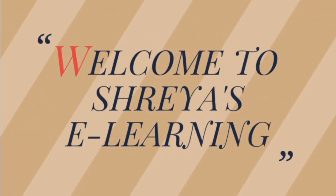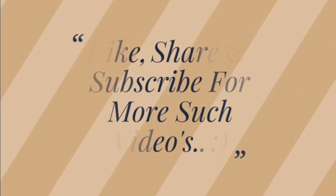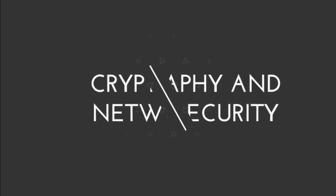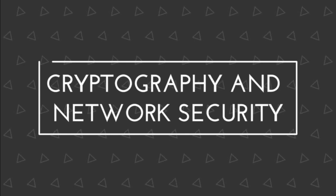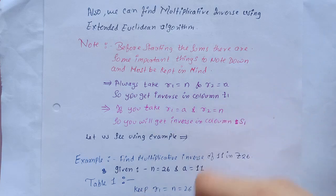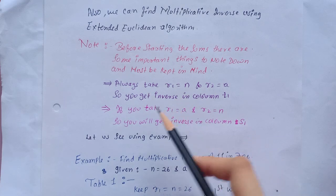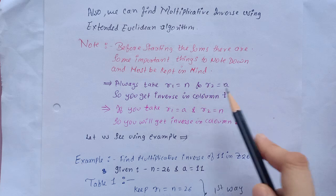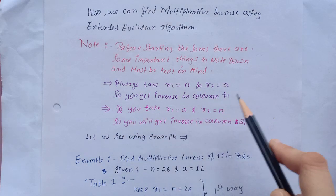Hello everyone and welcome to my channel Shriya's eLearning. We can find multiplicative inverse using Extended Euclidean algorithm, but you must remember something. Always keep in mind that you take r1 equal to n and r2 equal to a, so you get inverse in column t1.